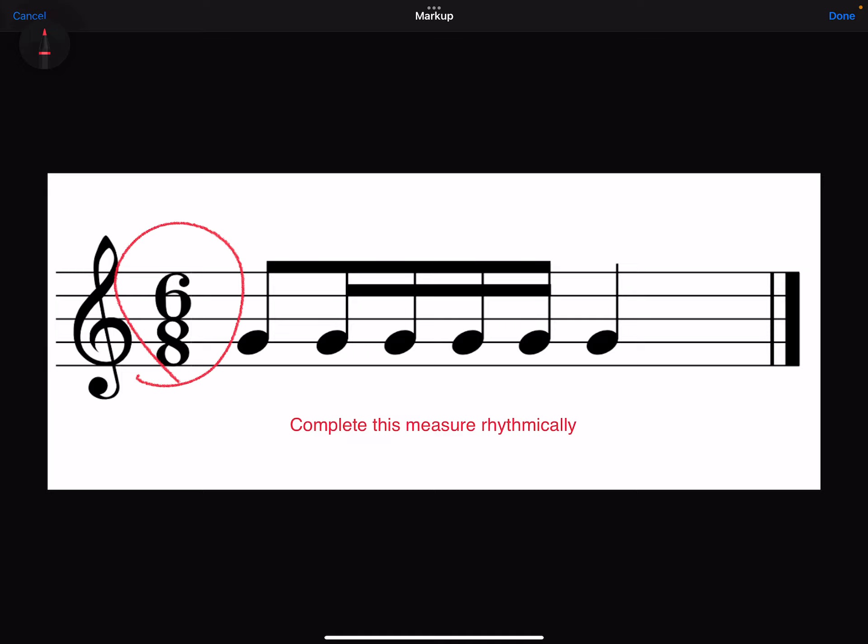First look at the time signature, 6-8. 6 on the top means 6 beats per measure. 8 on the bottom means the 8th note gets 1 beat. The 8th note is one of these right here.